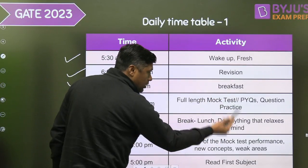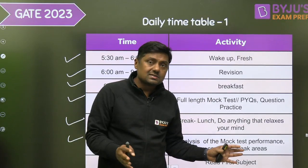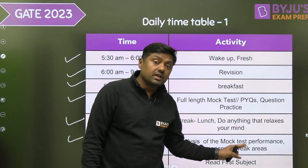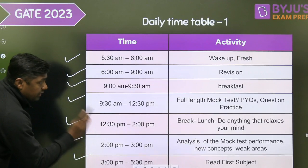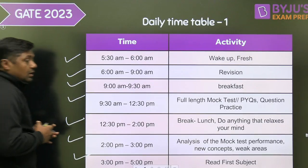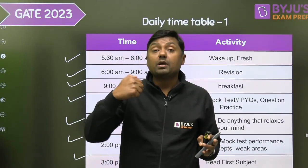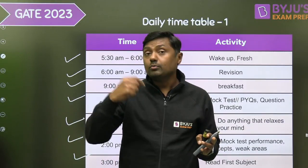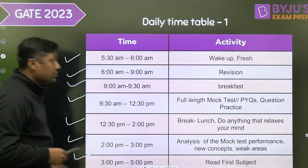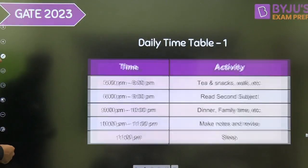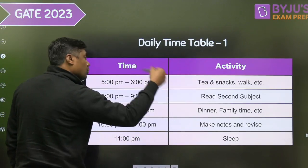From 2 to 3 PM, analyze your mock test performance: identify new concepts and weak areas, then work on those areas. From 3 to 5 PM, read your first subject. If you find difficulty in a particular subject or want to prepare a new topic from that subject, choose it as your first subject.